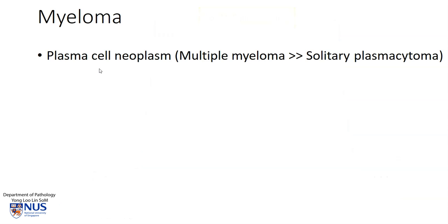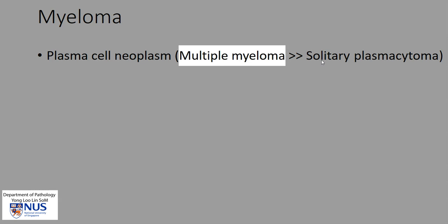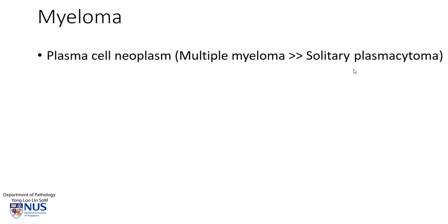Myeloma is a malignant plasma cell neoplasm, and it can occur as multiple neoplasms — this is known as multiple myeloma. Less frequently, it can occur as a solitary mass known as solitary plasmacytoma.